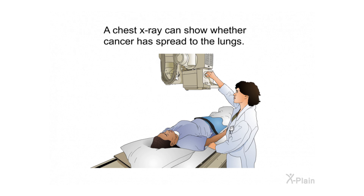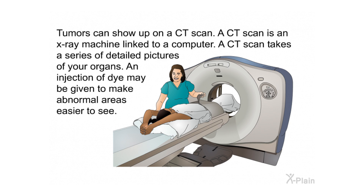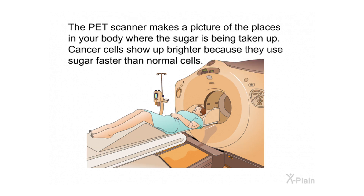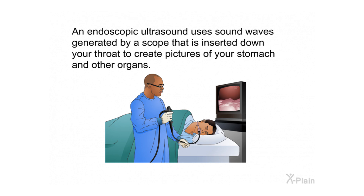A chest X-ray can show whether cancer has spread to the lungs. A CT scan — an X-ray machine linked to a computer — takes detailed pictures of your organs; an injection of dye may make abnormal areas easier to see. A PET scan can show if the cancer has spread elsewhere; you are injected with a small amount of safe radioactive sugar, and cancer cells show up brighter because they use sugar faster than normal cells. An endoscopic ultrasound uses sound waves from a scope inserted down your throat to create pictures of your stomach and other organs.